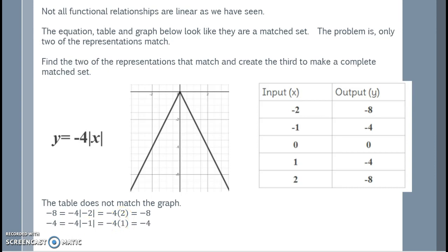We should double check another point just to make sure. So, is negative 4 equal to negative 4 times the absolute value of 1, which is negative 4 times 1, which is negative 4? So, this is the correct match together. So, the table and the equation are matching. Therefore, the graph is wrong.